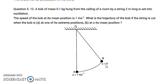Question 5.12: The bob of mass 0.1 kg is hung from the ceiling of a room by a string of length 2 meters. The string is oscillating, making the bob swing like a pendulum.